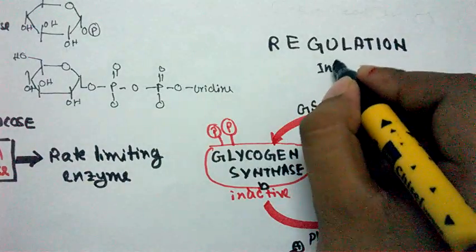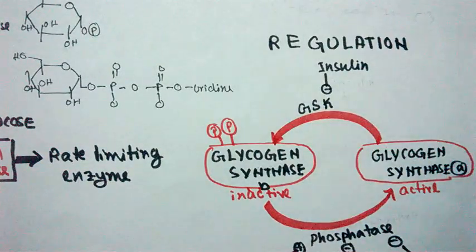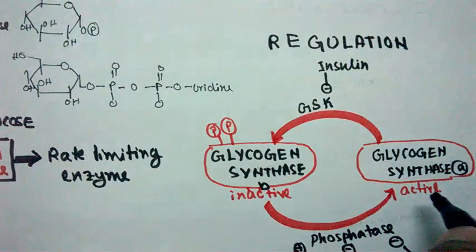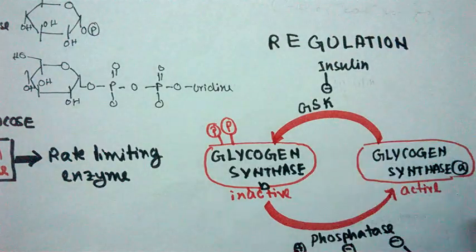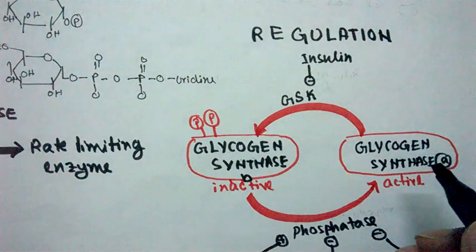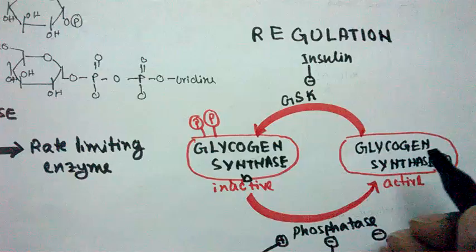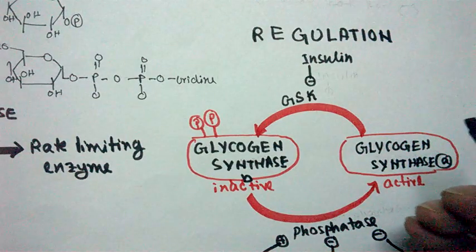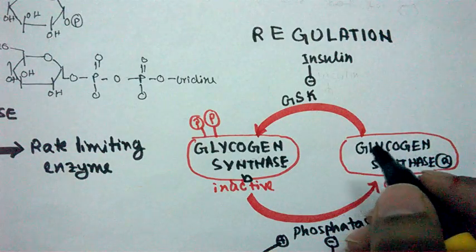Insulin actually inhibits glycogen synthase kinase, so the active form doesn't get converted into the inactive form. In the presence of insulin, the glycogen synthase 'a' form — the active form — takes part in the reaction and ultimately converts glucose into glycogen so that blood glucose levels can be lowered and glucose can be stored inside our liver for future purposes.